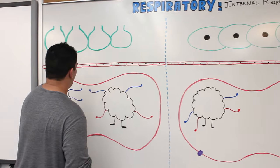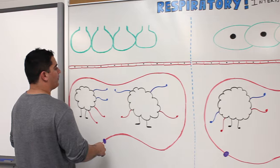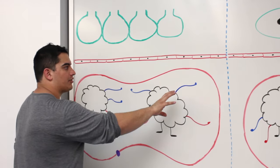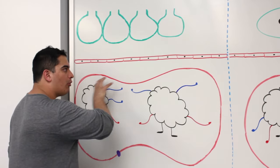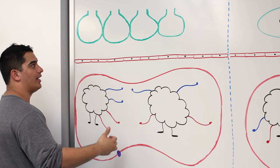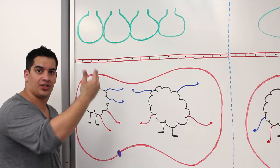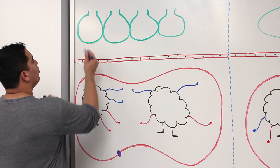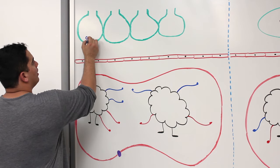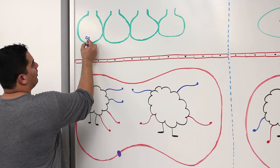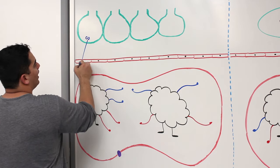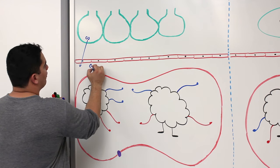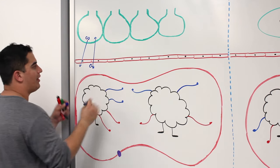If you guys remember, we have red blood cells coming through the pulmonary capillaries, where the alveoli is and where gas exchange is occurring. Which gas was moving which way? Oxygen was moving from the alveoli into the blood, and CO2 was moving from the blood to the alveoli.